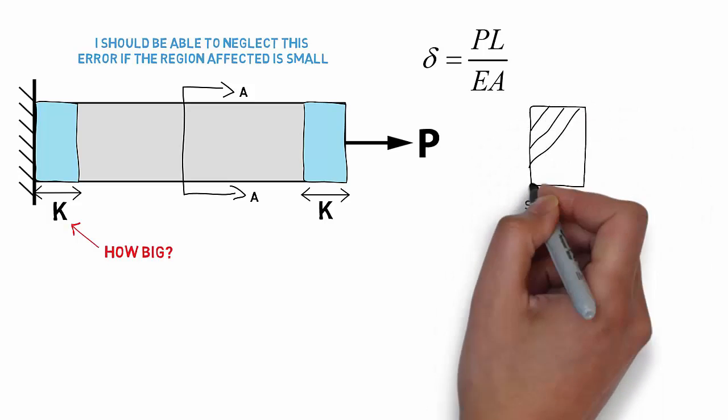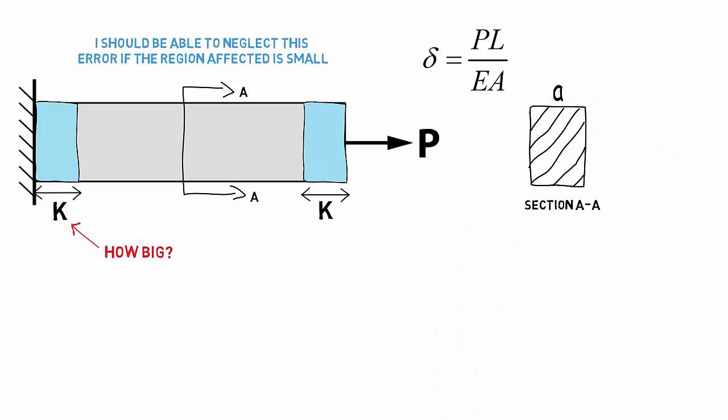So if the beam shown here had a rectangular cross-section of width a and height b, then k would be approximately equal to b.